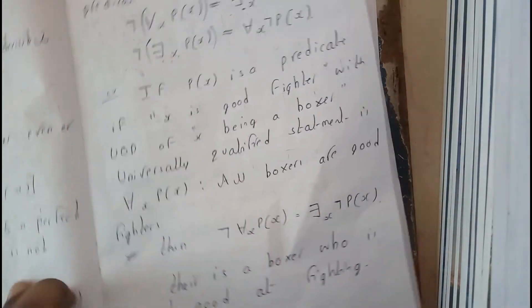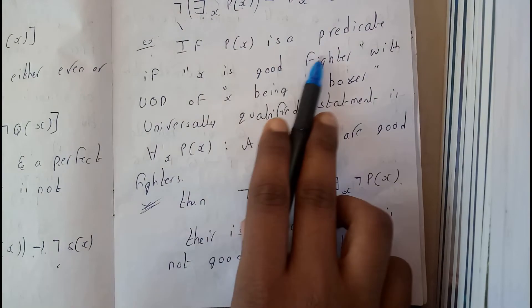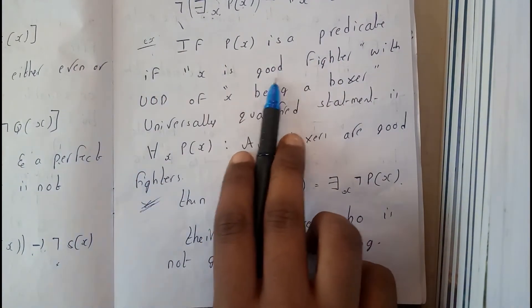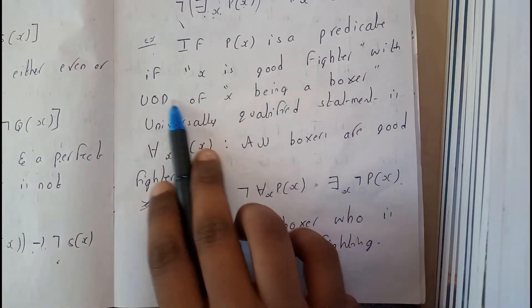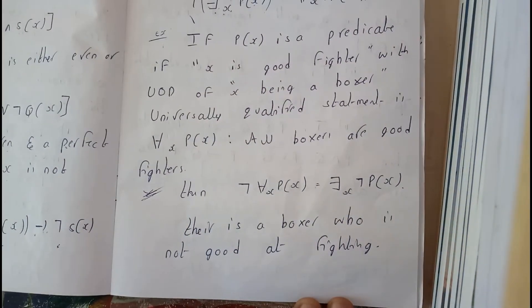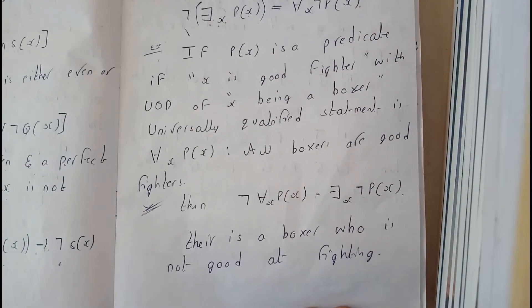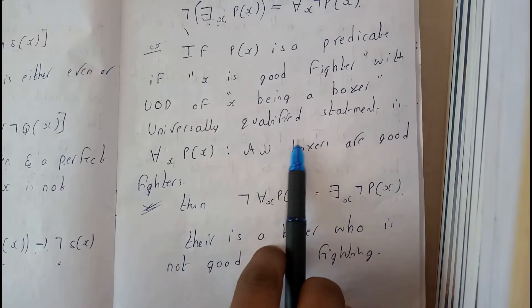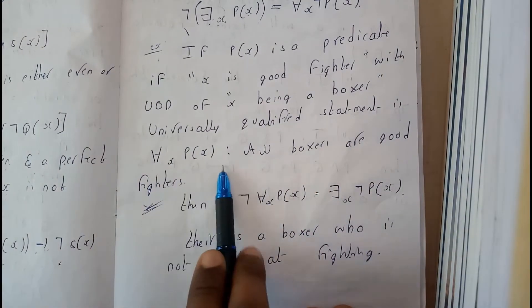Okay, now I think it's clear. If P(x) is a predicate, if x is a good fighter and x being a boxer - x being a boxer is a universal quantifier statement - is for all x P(x).